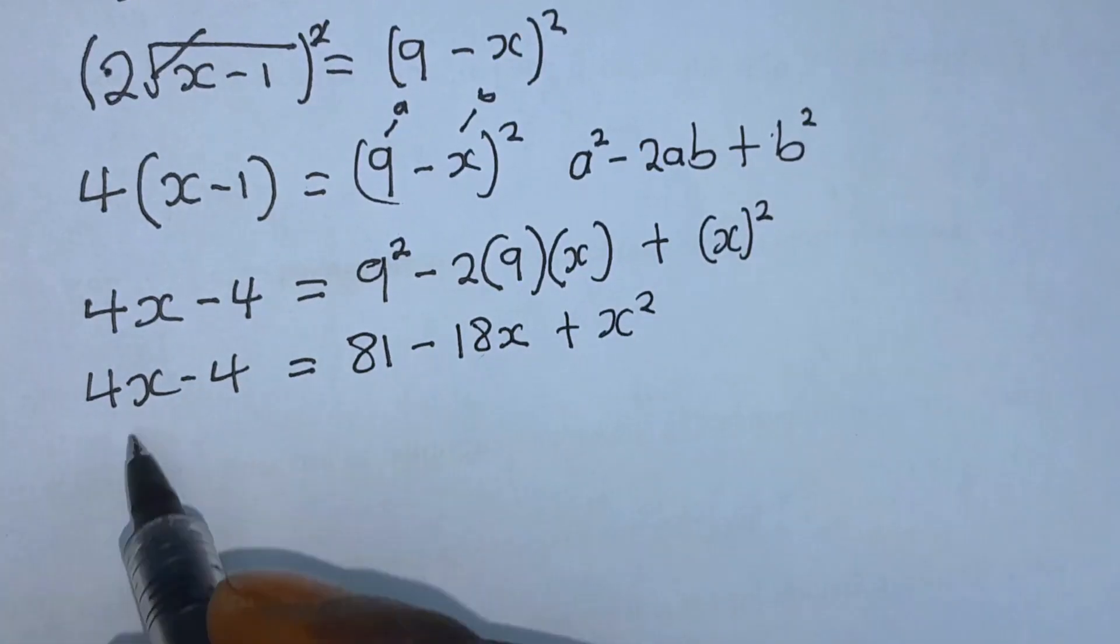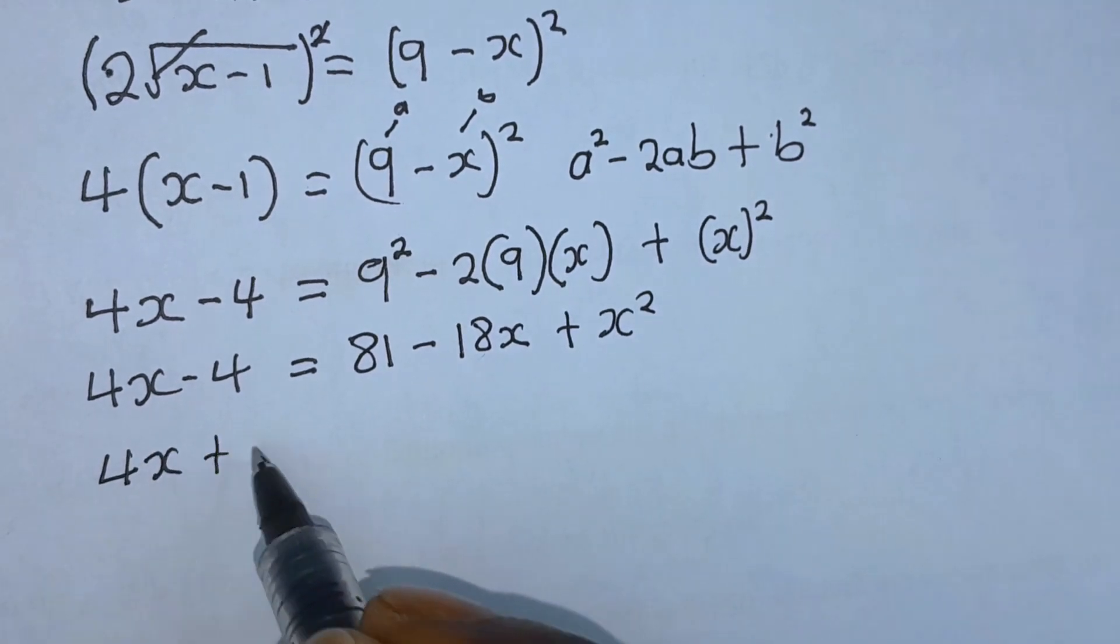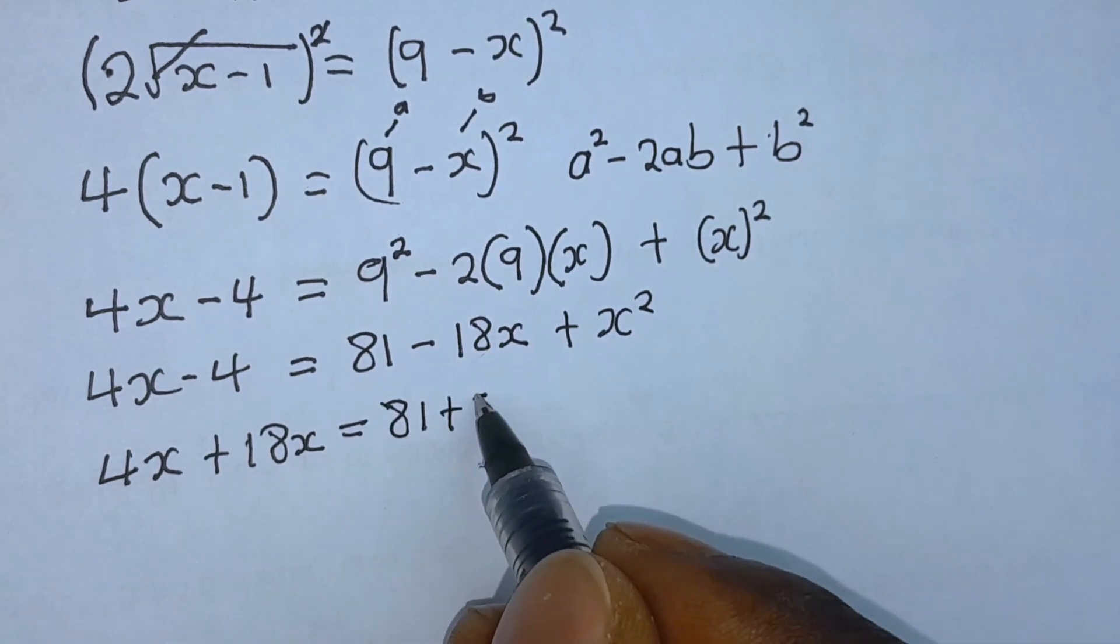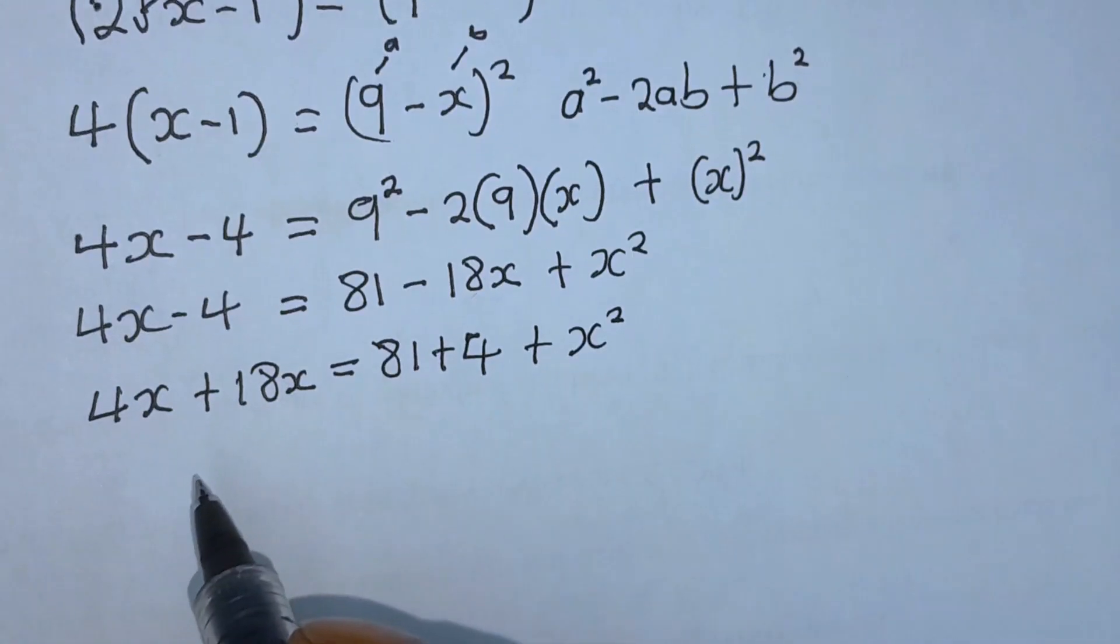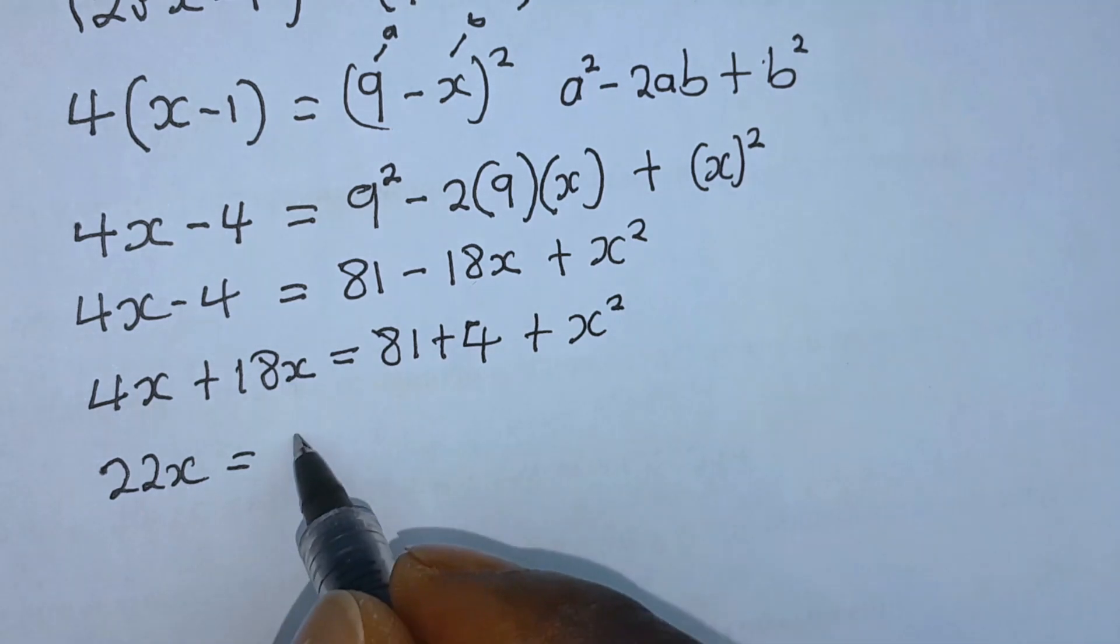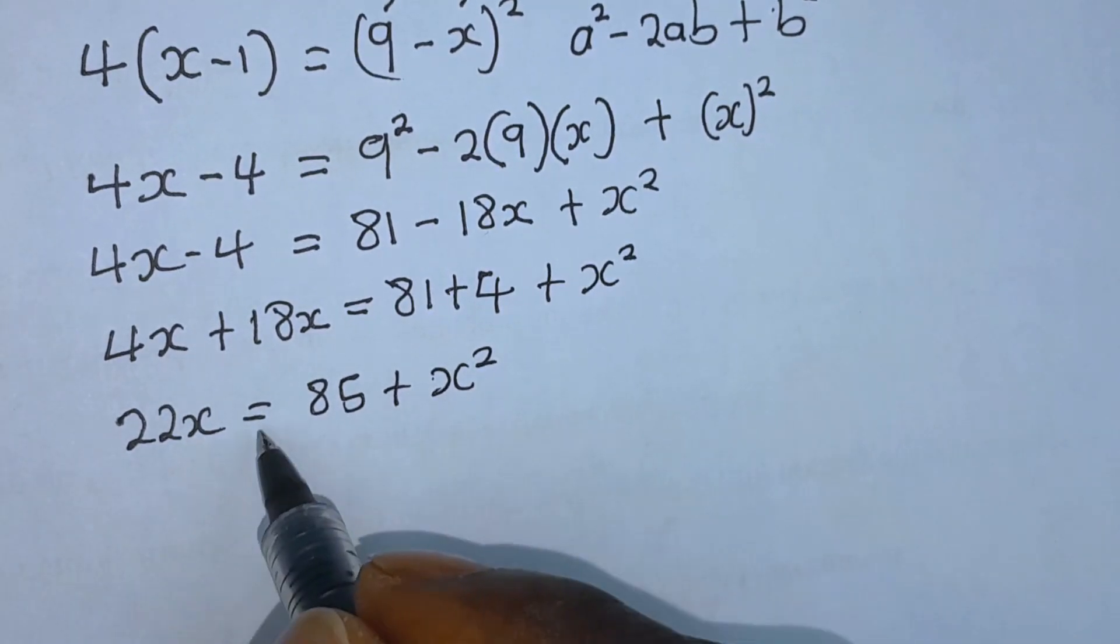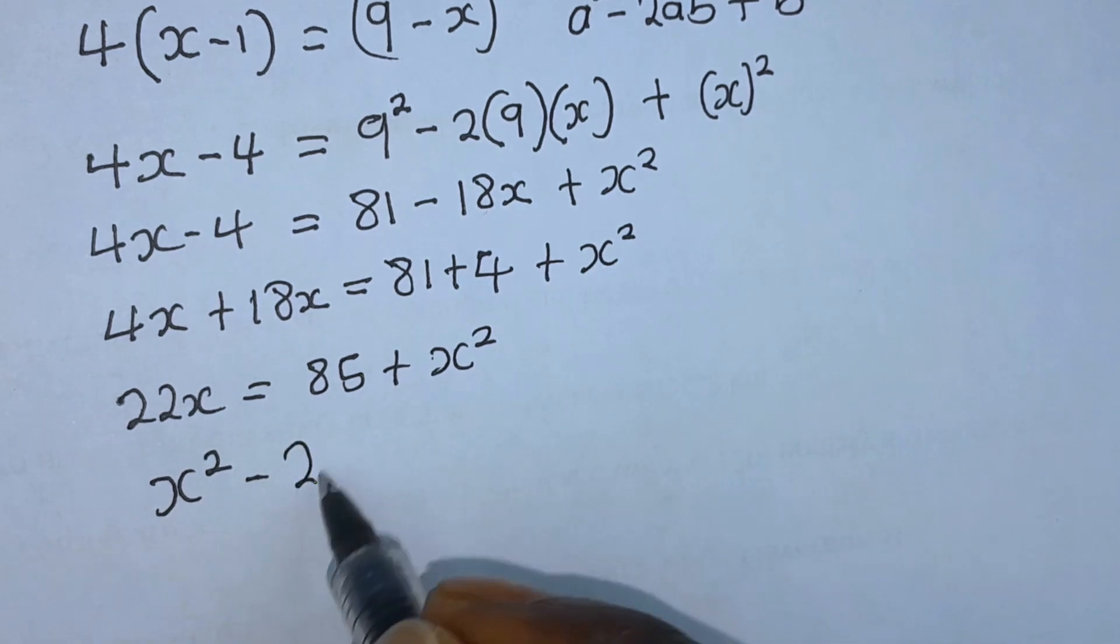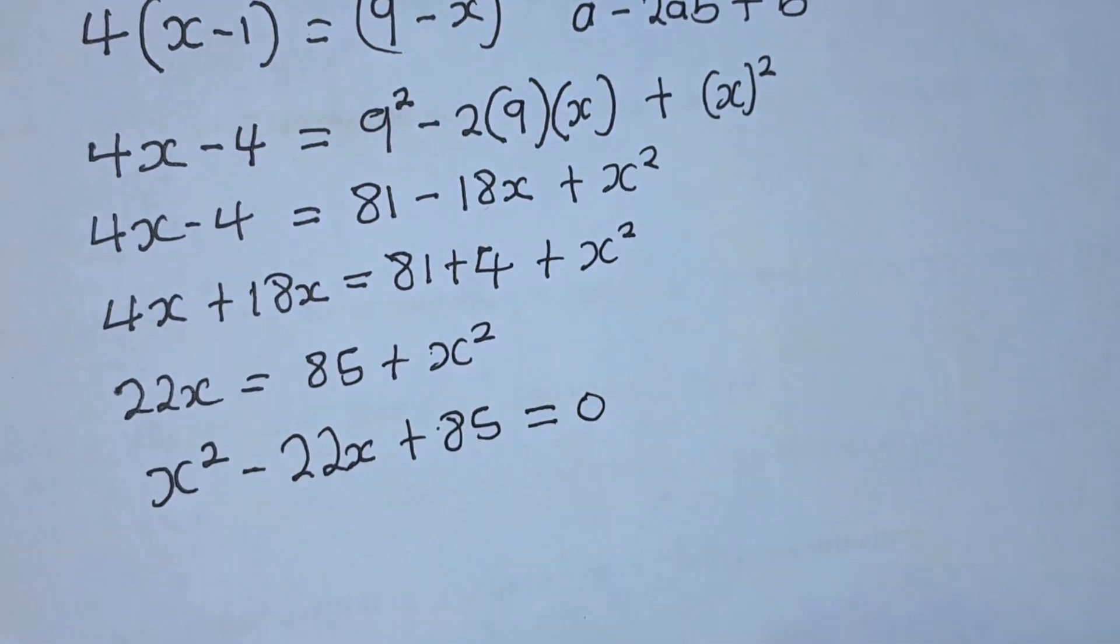Let's collect like terms. 4x plus 18x equals 81 plus 4 plus x squared. 4x plus 18x gives 22x, which equals 81 plus 4 is 85 plus x squared. Collecting like terms together, we have x squared minus 22x plus 85, set everything equal to 0.